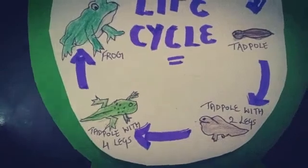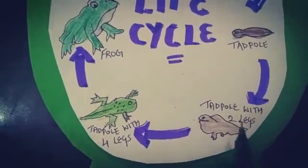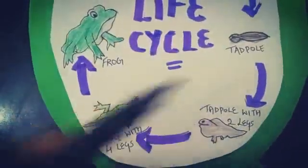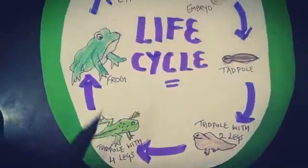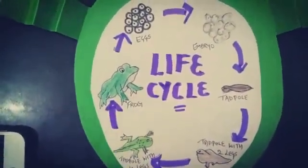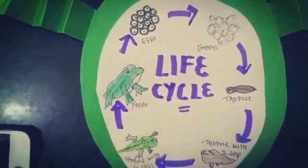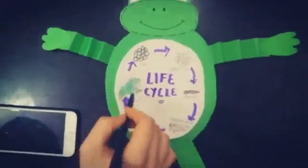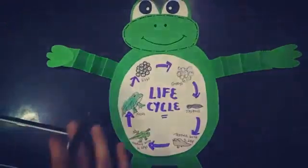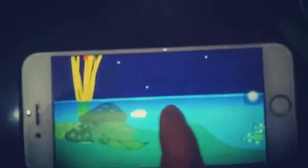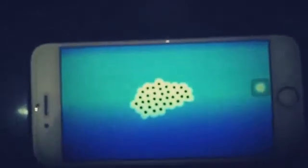They breathe outside the water, and their tail gradually reduces. It becomes a young frog and moves to land. The young frog grows and develops into an adult frog. Young frog will develop into an adult frog. Now I will show you something — in this particular video, I am going to show you the life cycle of a frog and how it takes place.